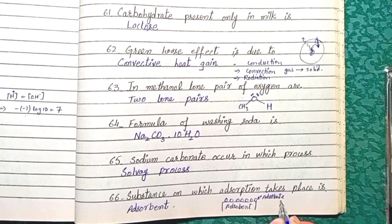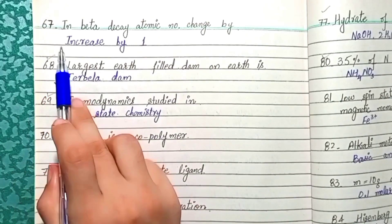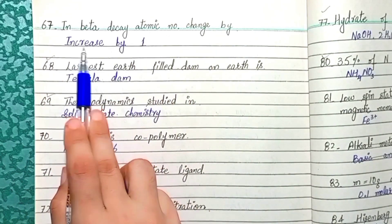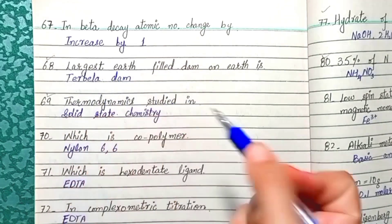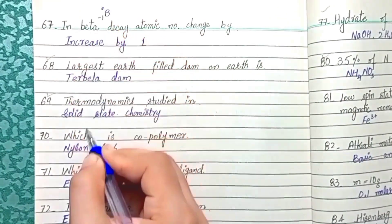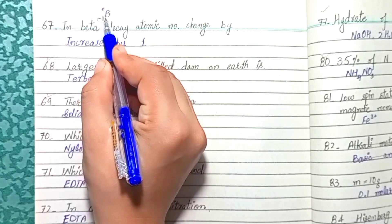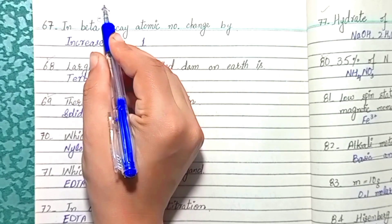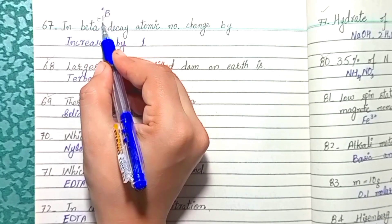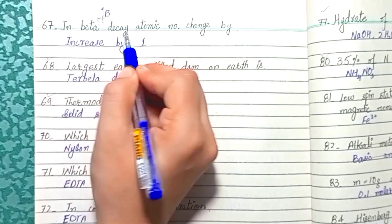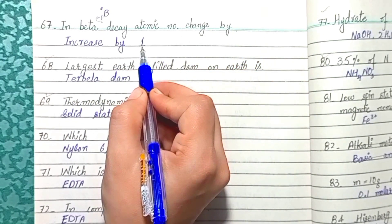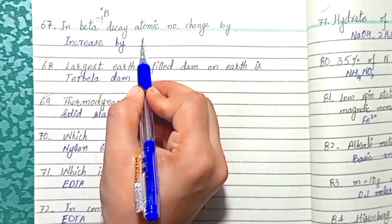Question 67: In beta decay, the atomic number increases by 1. Beta radiation is represented as 0 and −1 — the lower number represents atomic number and the upper number represents atomic mass. Since the lower value is −1, the atomic number of the emitting element increases by 1.